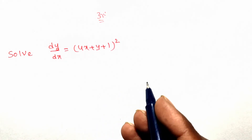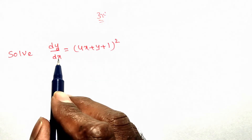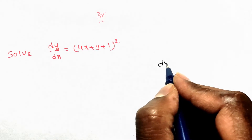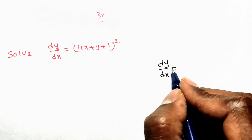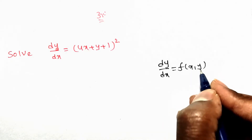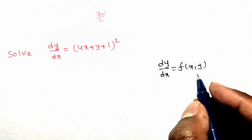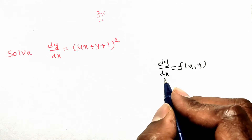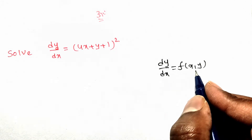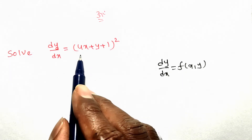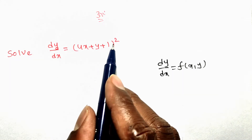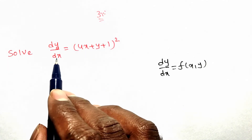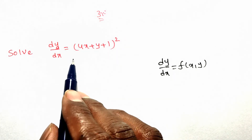Here you observe dy/dx means first order, and dy/dx to the power 1 means first degree. We have different methods to solve first order and first degree equations. The first method is variable separable — we separate x and dx terms on one side, and y and dy terms on the other. But here f(x, y) = (4x + y + 1)², and you cannot separate the variables — it is not possible.